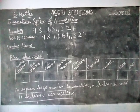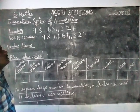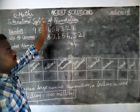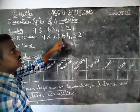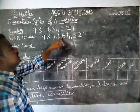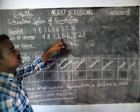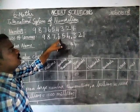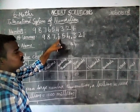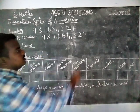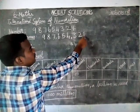Listen carefully. In the Indian number system, there is a difference at this place. In the International Number System, this is called hundred thousand. Listen carefully again.